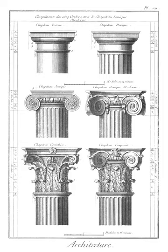Chancel: in church architecture, the space around the altar at the east end of a traditional Christian church building, including the choir and sanctuary.